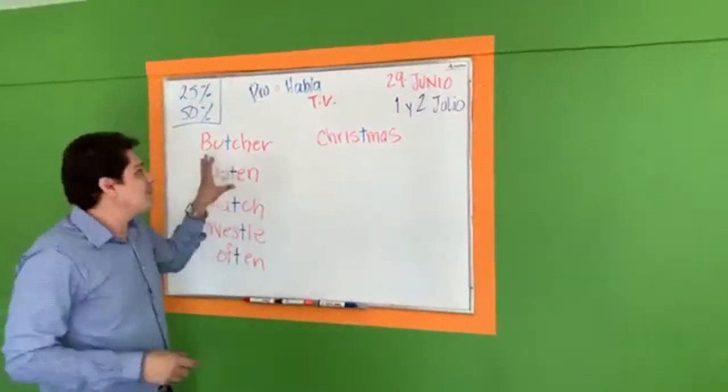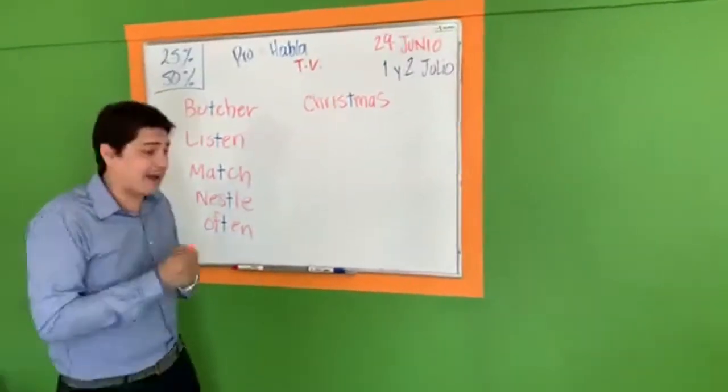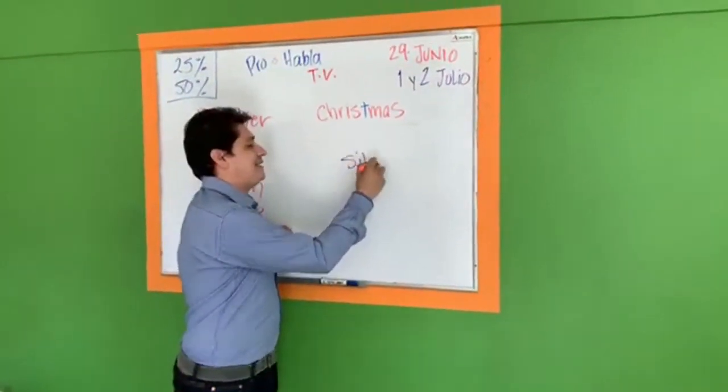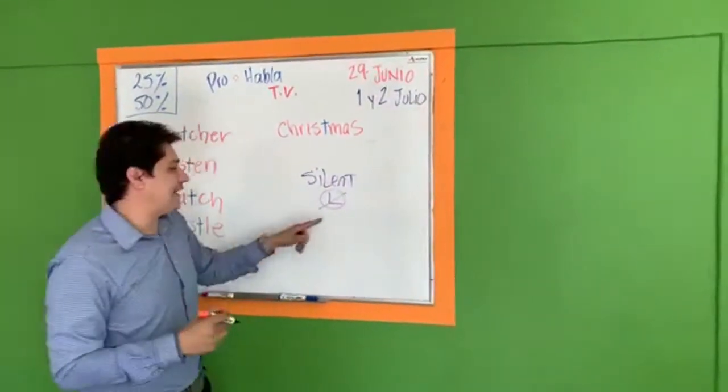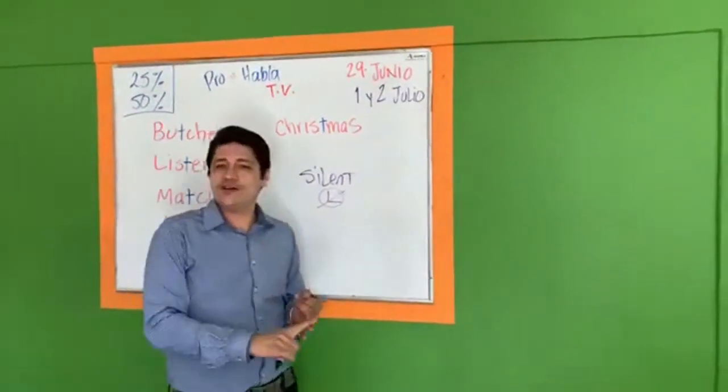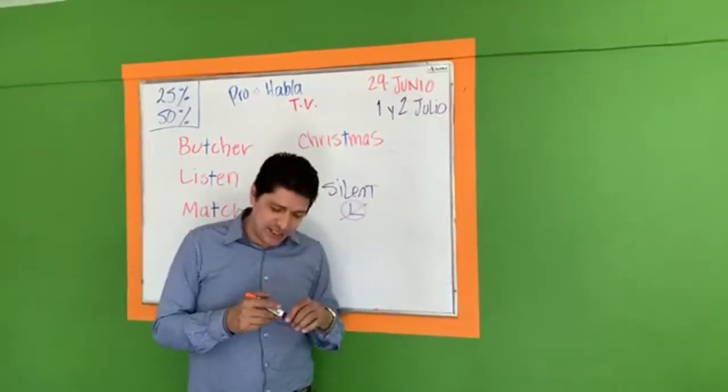Okay, we're going to continue with the pronunciation series. Yesterday, do we have a person ready? Okay, yesterday, we had silent L. Okay, silent L. Would, could, should. Okay, check the video. If you didn't see the video, you need to check that out.